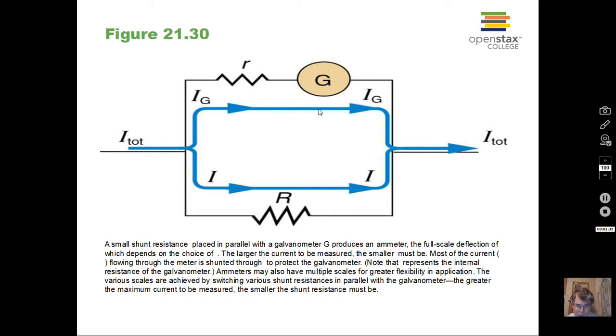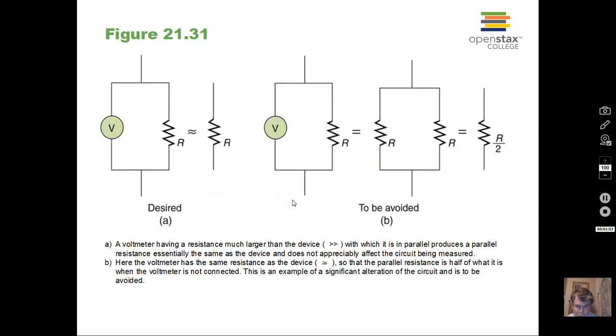When we make an ammeter, then we have a small resistance in parallel with the galvanometer, so most of the current will go through this small resistance. A little bit of current will go through here to activate the galvanometer, but this will be a small resistance. The voltmeter characteristic is high resistance, the ammeter characteristic resistance is small.